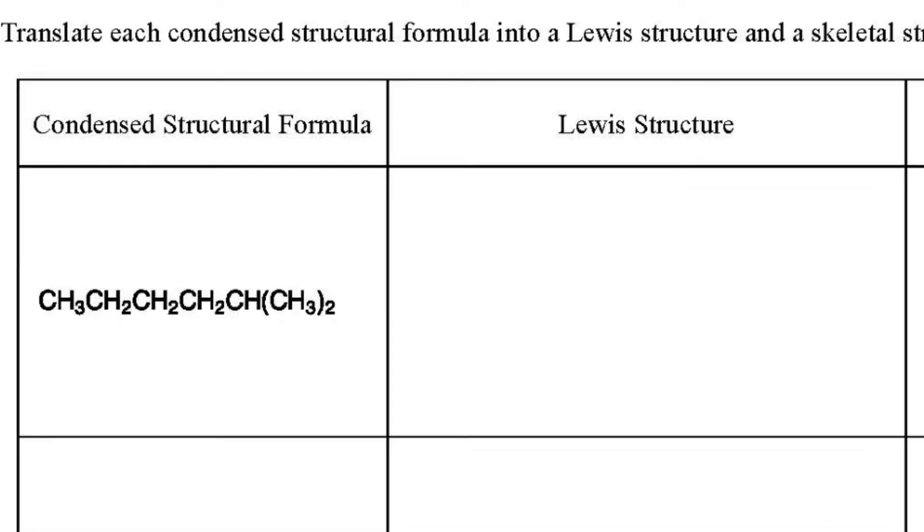Reading the structure from left to right, it starts with a carbon that's bonded to three hydrogens. Next, there are a series of three CH2 groups. This is followed by a CH, and then two CH3 groups are bound to that.